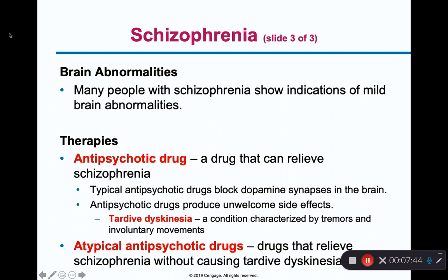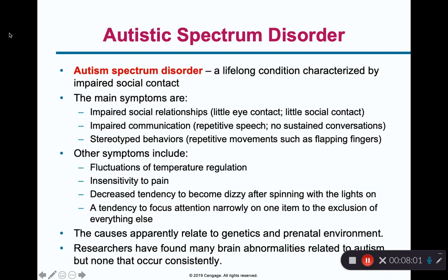Researchers really look at brain abnormalities with schizophrenia. You can look at the brain of a schizophrenic and a non-schizophrenic and see differences in certain areas of growth. Generally, schizophrenia is treated with drugs — treating schizophrenia with therapy alone is not generally very effective.